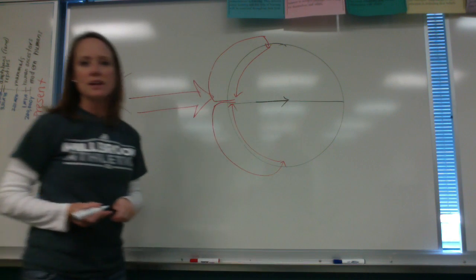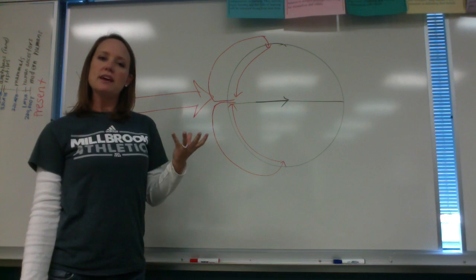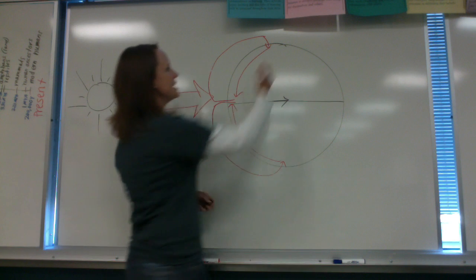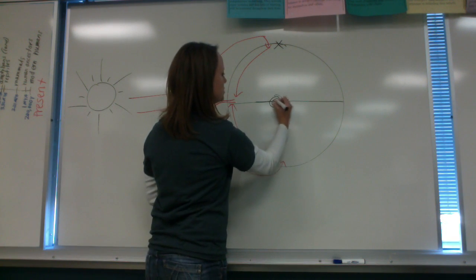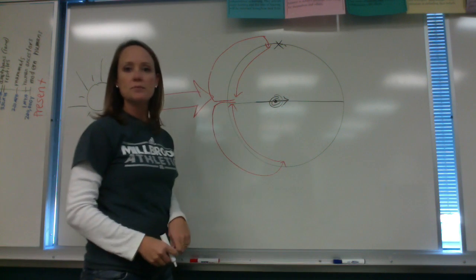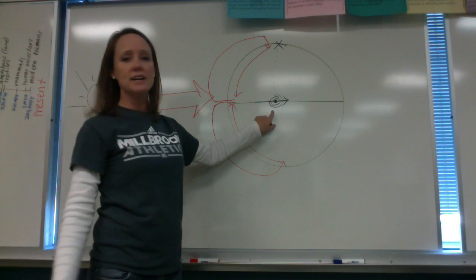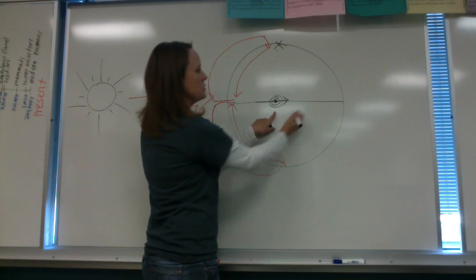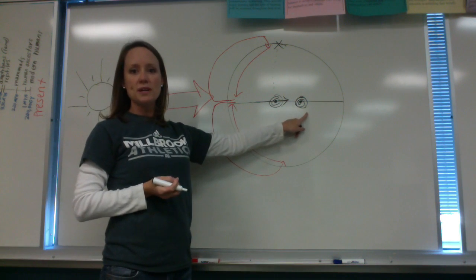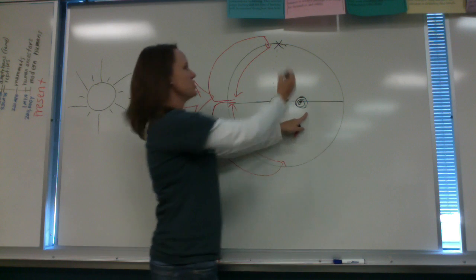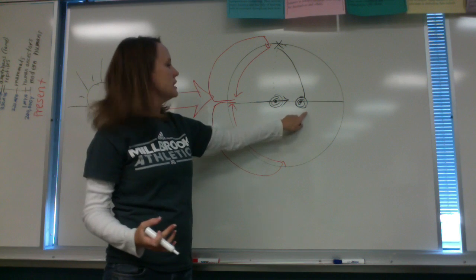Let's say the Earth is spinning in this direction. If you are in an airplane while you are in the air, the Earth is still spinning. Say you are at the North Pole and you want to fly to a location on the equator. If you fly in a straight line, you're not going to hit your target, because while you are in the air the Earth has rotated. So to hit your target, you would actually have to curve your flight pattern, and that way you would get where you needed to go.